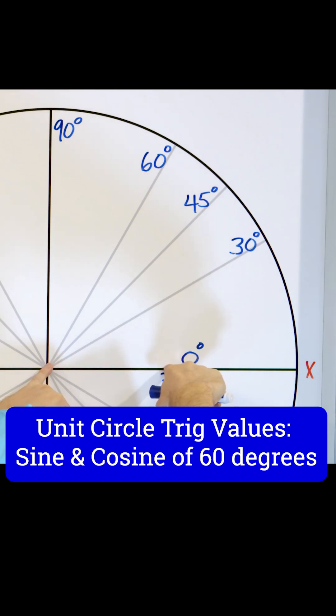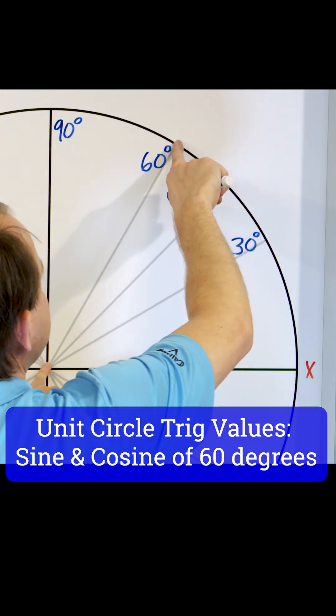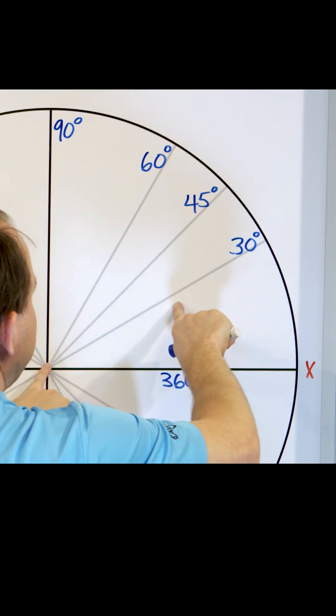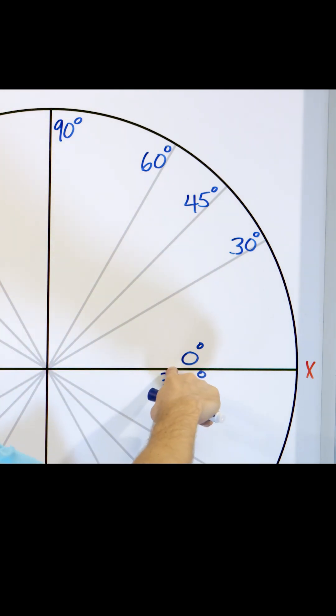And the cosine will be the projection down here. Now look at this interesting thing: the cosine here comes right in the middle right here. Doesn't that look like about a half?